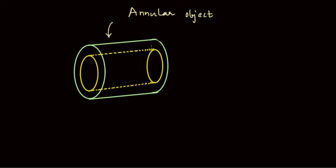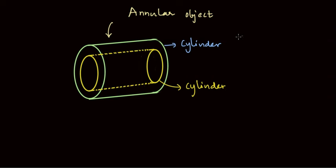As you can see, this is a cylindrical annular object with the blue border showing the outer layer and the yellow border showing the inner layer of this object. If we look at them individually, the blue object is also a cylinder and the yellow object is also a cylinder — just that this is a larger cylinder and the yellow one is a smaller cylinder.